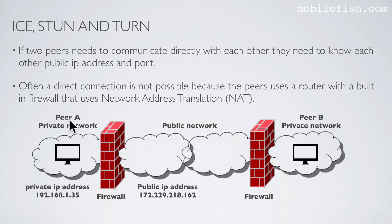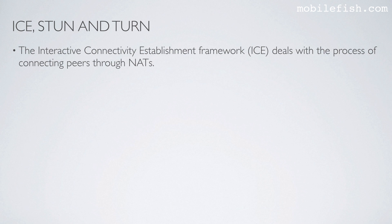In this example, peer A wants to communicate with peer B. To make this happen, they need to know each other's public IP address. This is peer A's private network and this is the private IP address of this computer, but the public IP address of this computer is different. The Interactive Connectivity Establishment Framework, ICE for short, deals with the process of connecting peers through NATs.